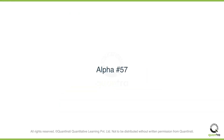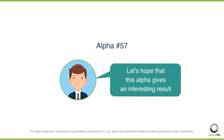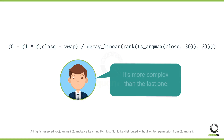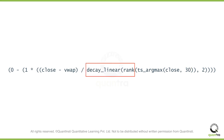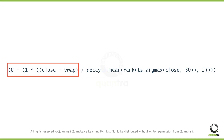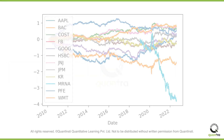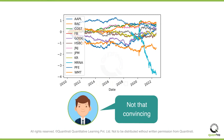How about alpha number 57? Keep in mind that what we are doing here is taking a long shot in the hope that some of the alphas we investigate may bear fruit, with no guarantee that they will. Calculating this involves some more vectorized complexity than the previous alpha. First, we calculate the volume weighted average price. Next, the argmax function tells us which day of the last 30 days of close prices was the highest. This is now ranked and smoothened with a weighted moving average. Finally, we divide the first expression by the second. Here's what the results look like — and these do not look convincing either.